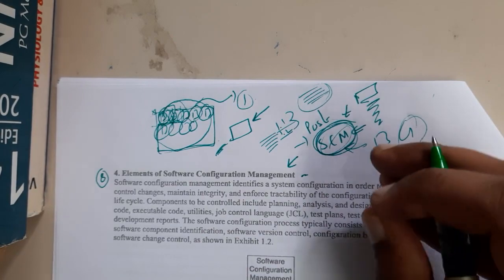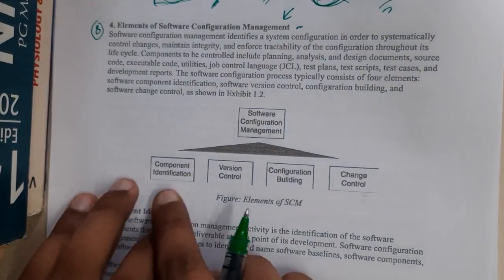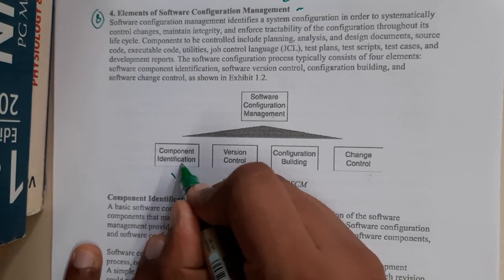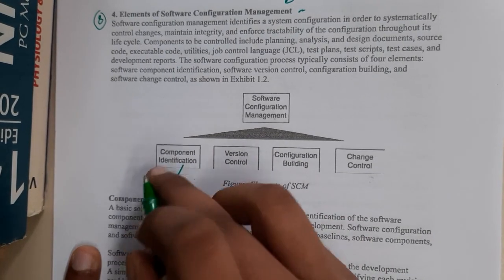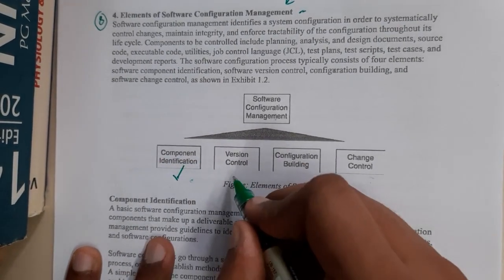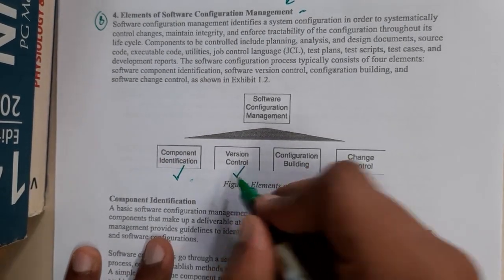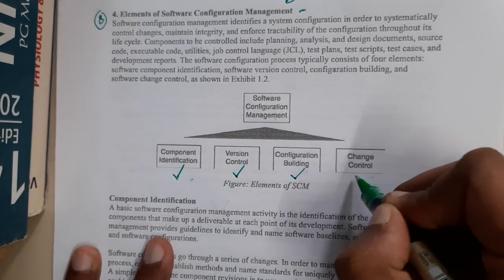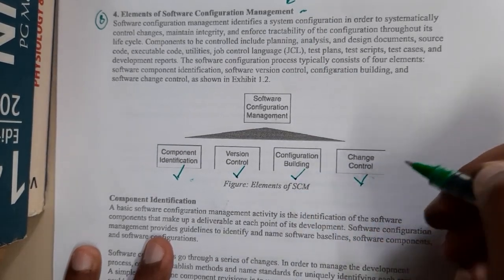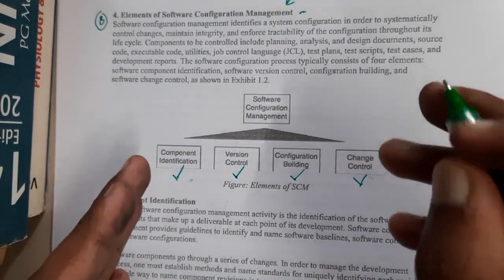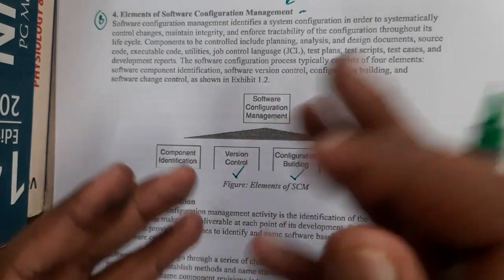There are four main things the SCM does: component identification, version control, configuration builds, and change control. In simple words, he manages everything related to the codebase and its evolution.